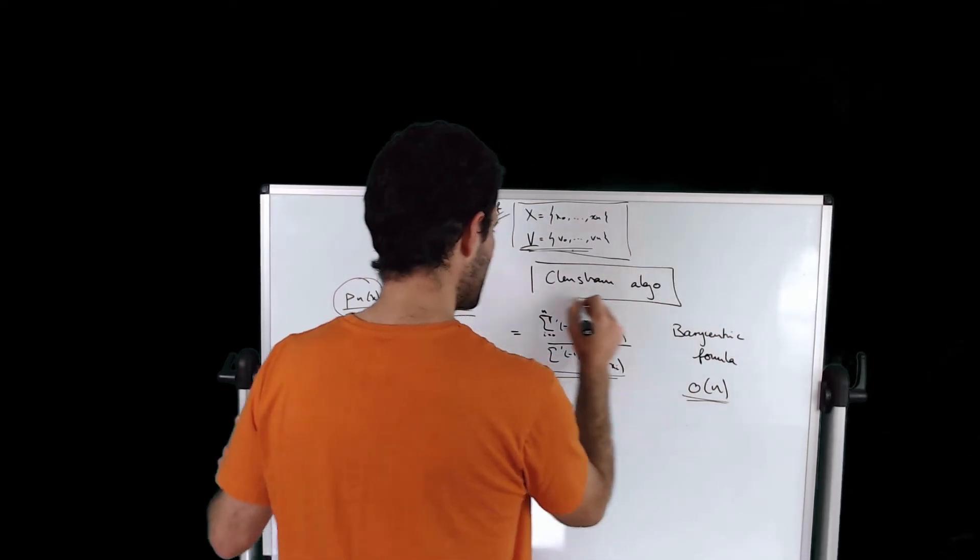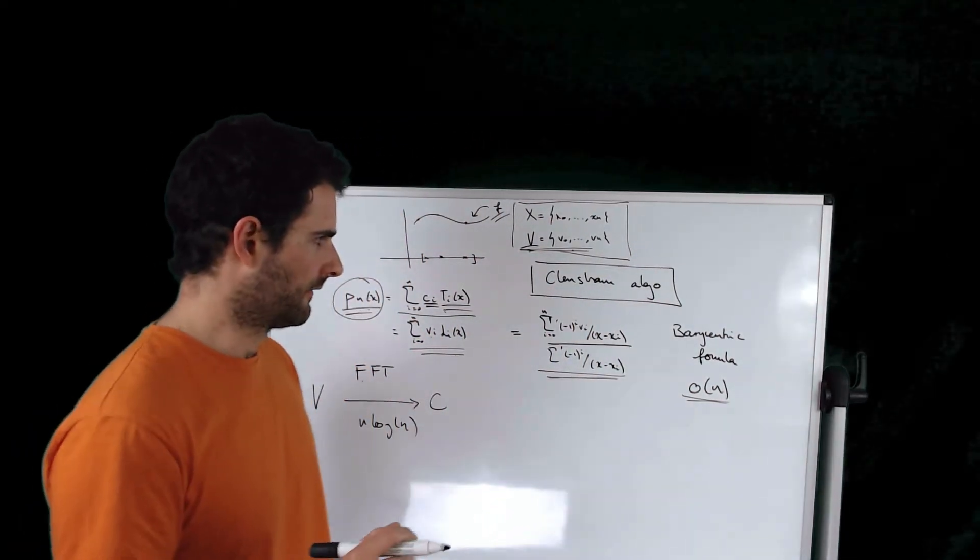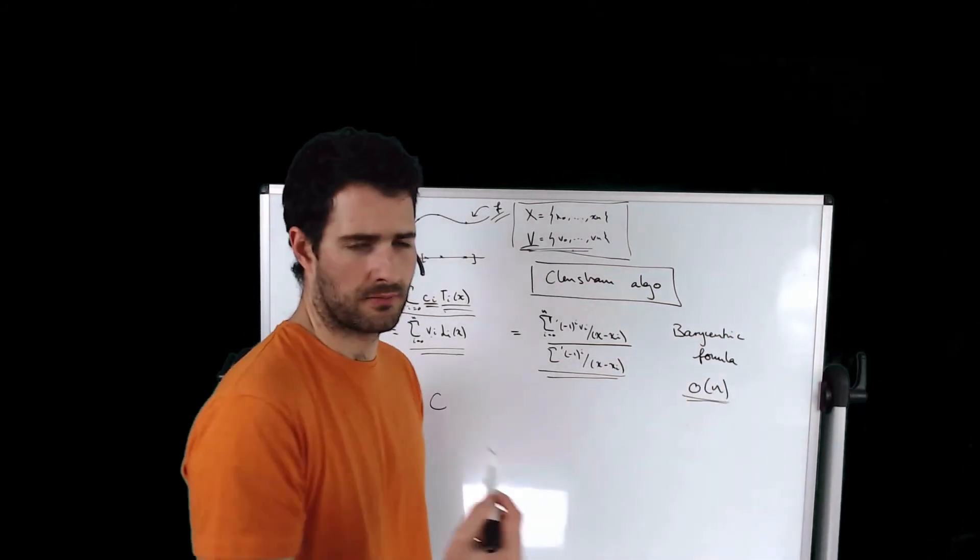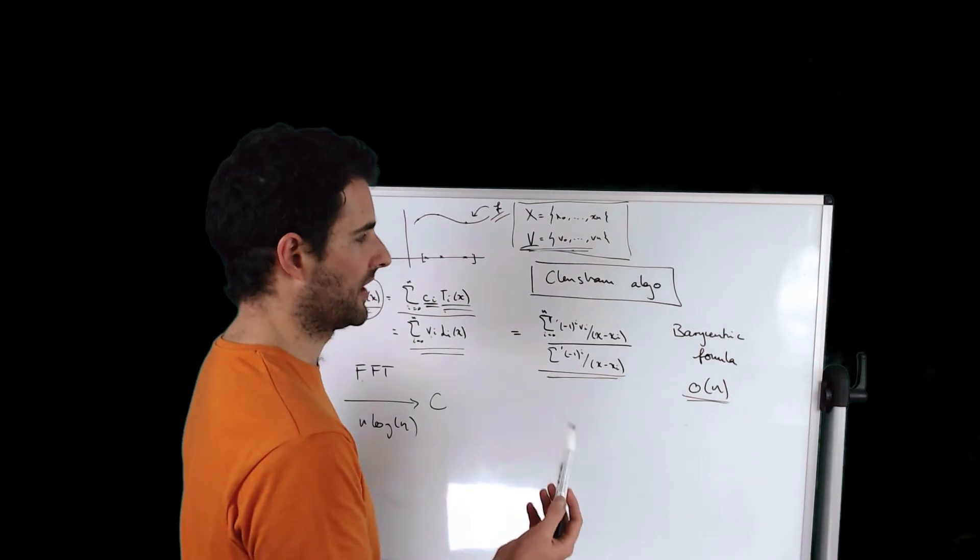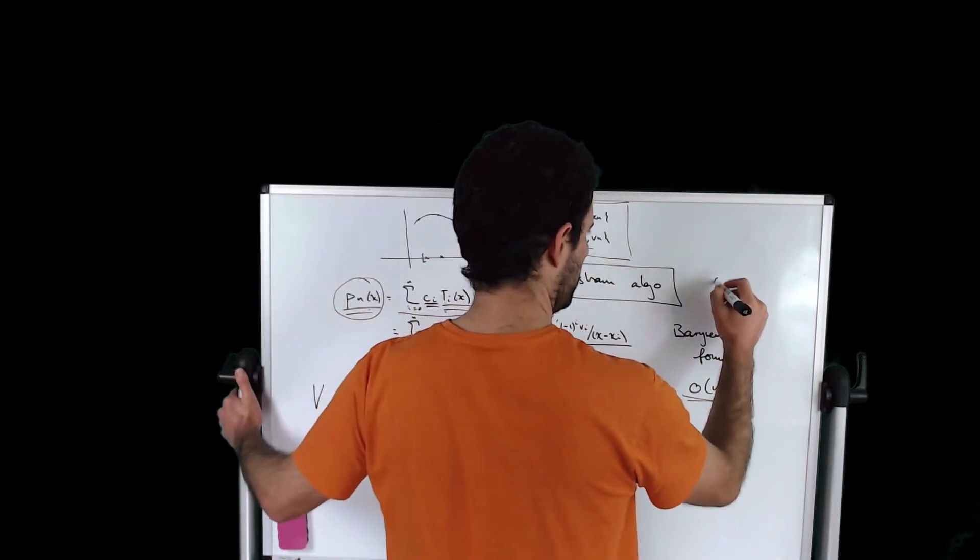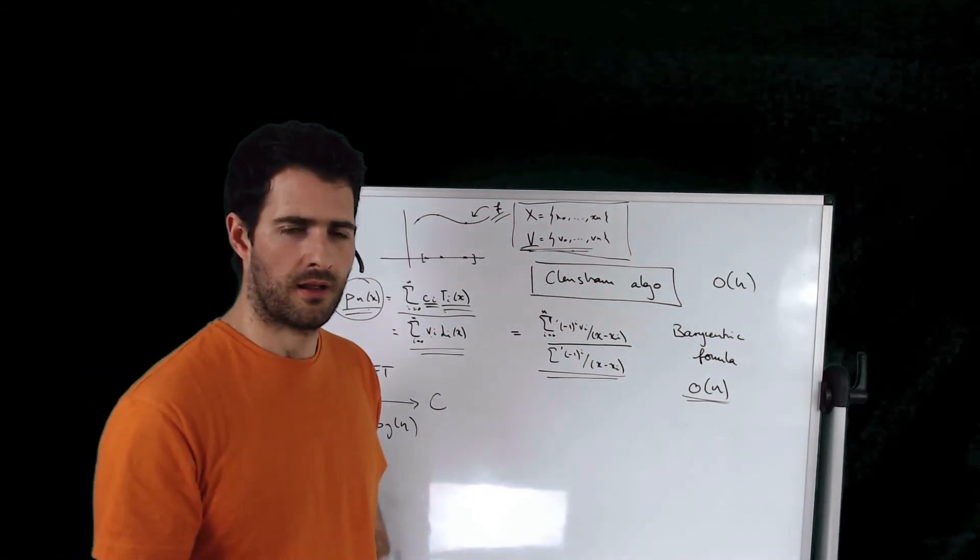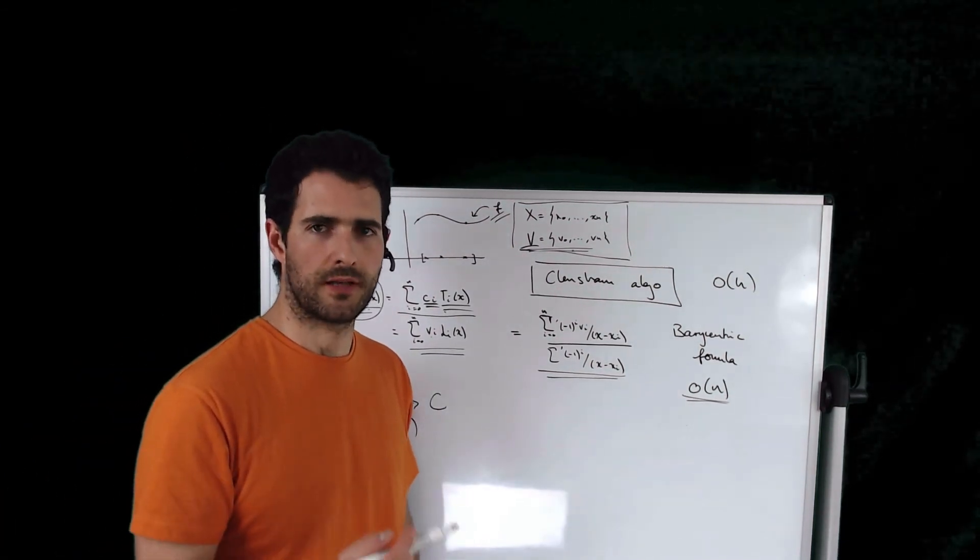So this algorithm has very similar properties to the barycentric interpolation formula. First of all, it can be evaluated with linear complexity, so O(n). And secondly, it's also numerically stable.